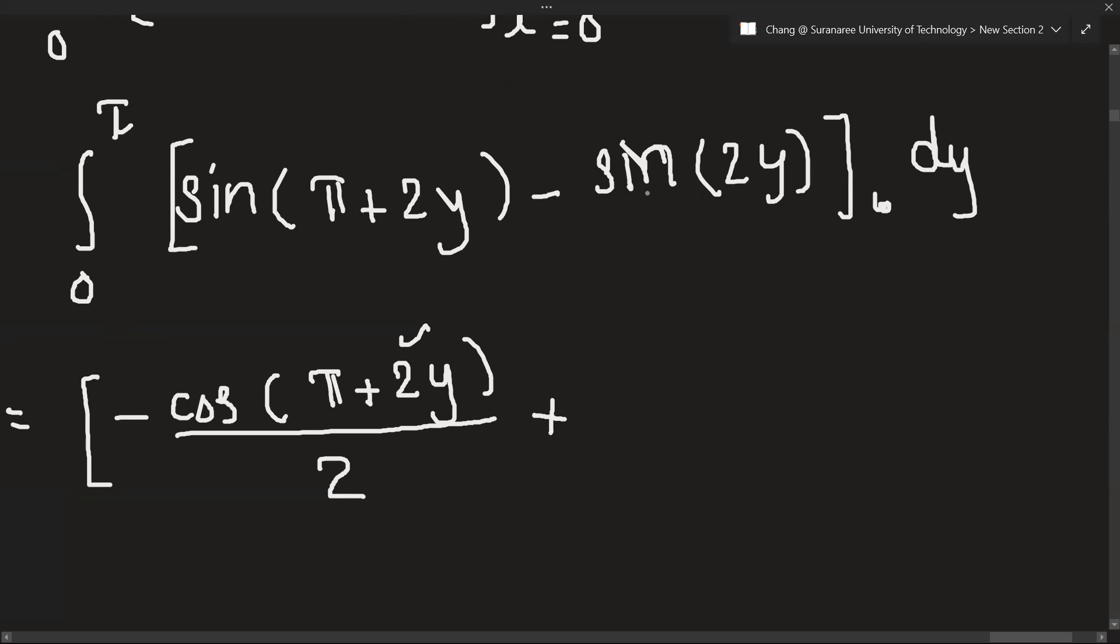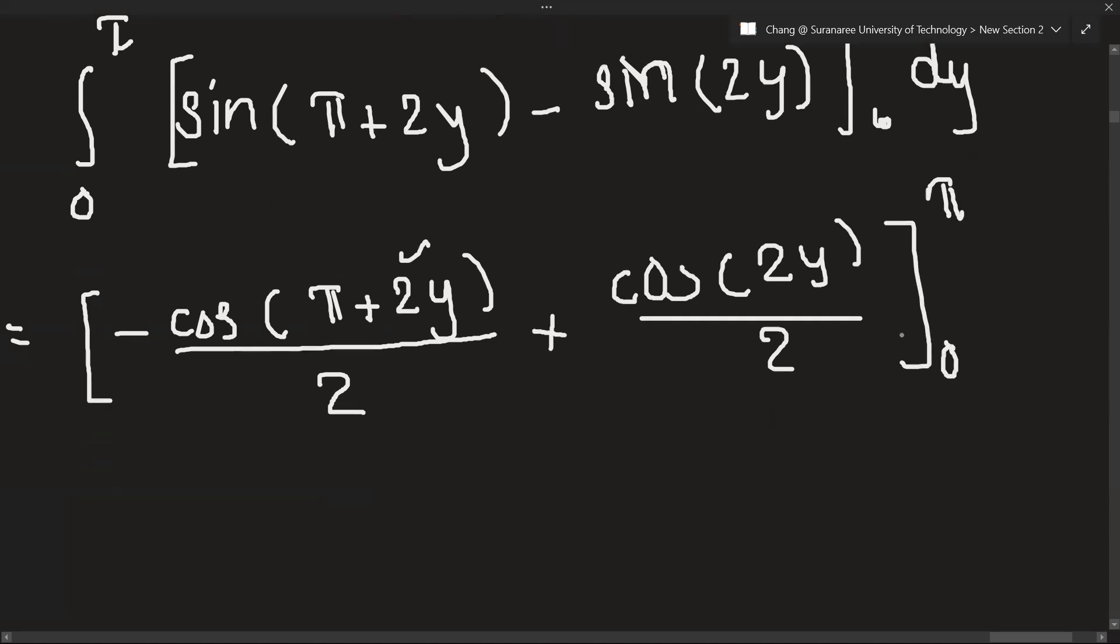when you integrate sin, you will get minus cos, right? So this minus and minus will get plus. So cos 2y, and you just simply divide with 2 again. And the value of y ranges from 0 to pi over 2.